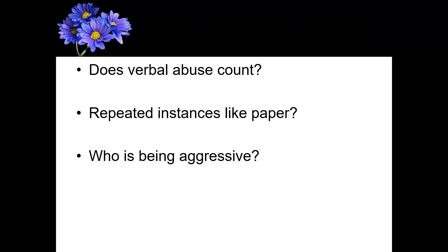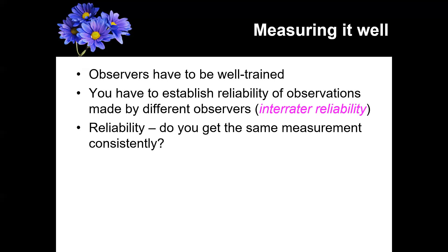Lastly, who's being aggressive? At the end, the kid takes out a stick and starts hitting the bullies with it, so you can run into the issue of who is actually being aggressive. The video implies it's just the bullies, but maybe it's the kid as well. This illustrates how things can go wrong when you don't clearly operationalize the behaviors in question — when you leave it open to personal opinion, you end up with different ratings depending on who's watching.